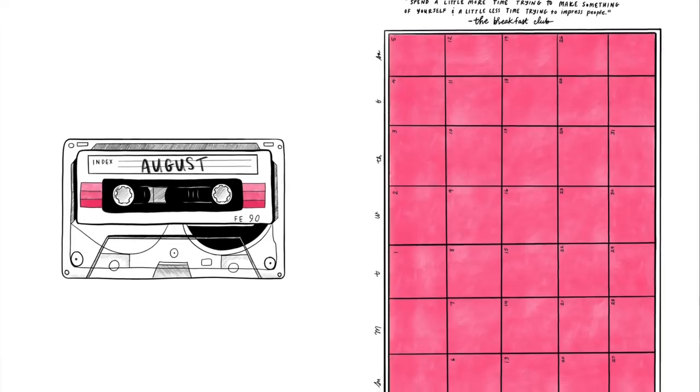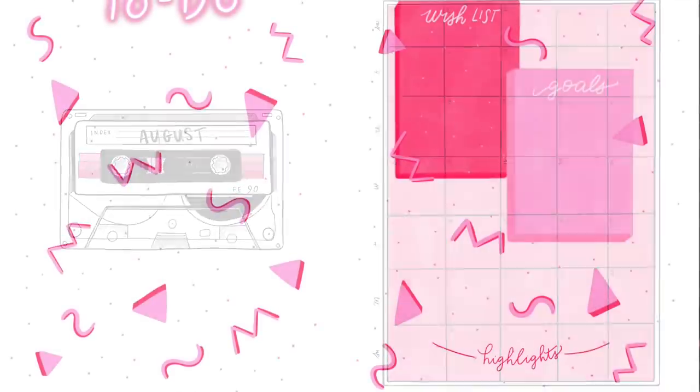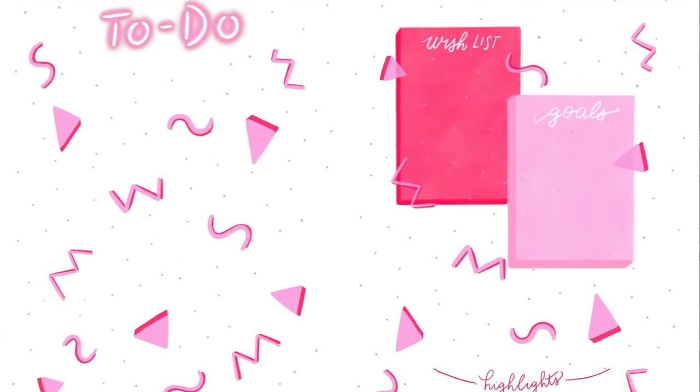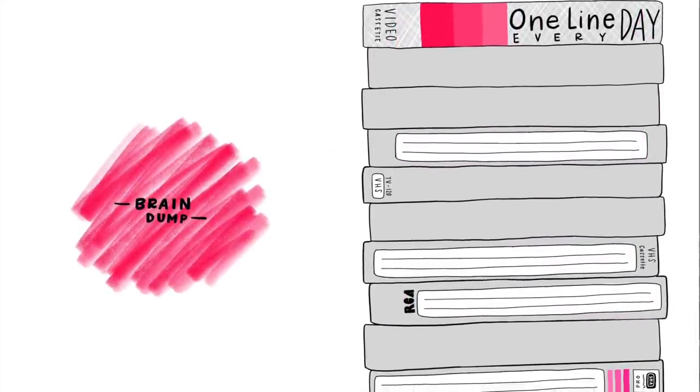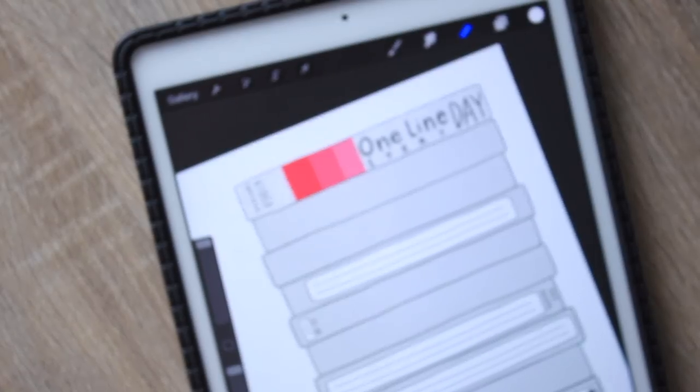So I am going to make all of these pages available as a digital file on my Etsy like I did last month. If you want to print it out and use it or if you want to import it into Procreate and use it digitally. I know a lot of you guys like doing digital bullet journaling too. And if you don't like making your own spreads, this is perfect because I've already created it for you.